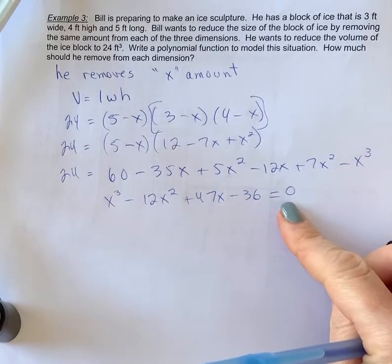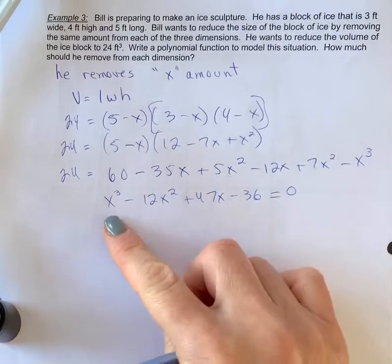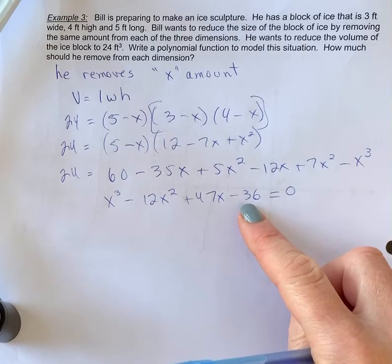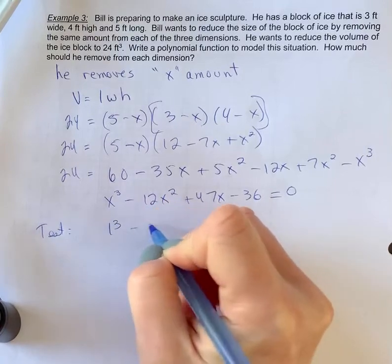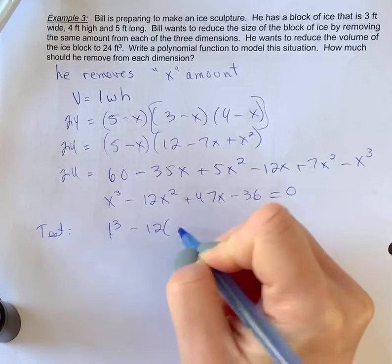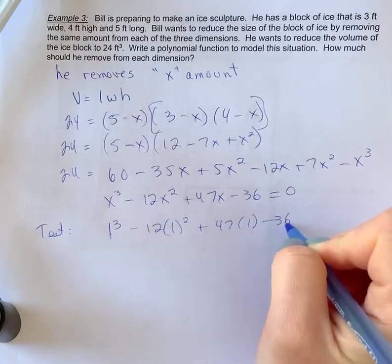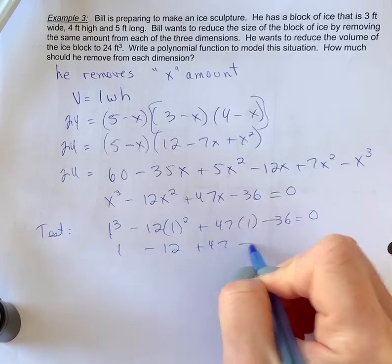It's very important that it's set to zero, because now you're solving for x. So to solve, we need to factor. So to factor, we're going to test a point, factors of 36. So I'm going to try 1 first. So 1 cubed minus 12 times 1 squared plus 47 times 1 minus 36 equals zero. So we get 1 minus 12 plus 47 minus 36.